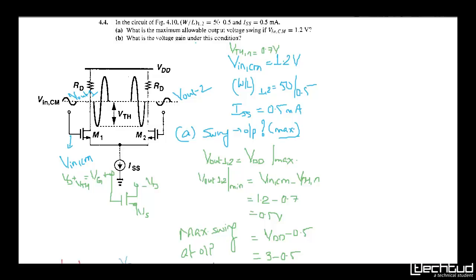Moving forward: if this is the ISS current and you have set up the DC operating point, then ISS/2 will be flowing from each branch. Now you have a wiggle — meaning an AC amplitude comes at one input and the opposite phase AC amplitude comes at the other input. So on one input side we give some AC perturbation, and on the other side it will be just the opposite. Remember this.